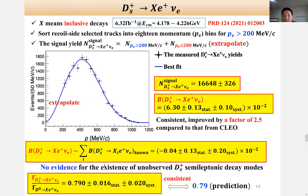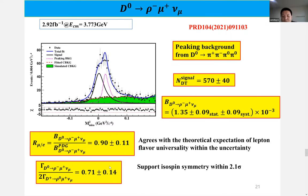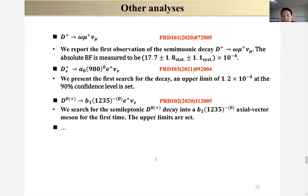Measurements of the inclusive branching fraction of Ds decay to X e nu are also shown, with electron momentum binned into 18 bins. Signals with momentum below 200 MeV are determined by extrapolation. The measured branching fraction is consistent with but improved by a factor of 2.5 compared to previous measurements. No evidence for excess of unmeasured Ds semileptonic decay modes was found. Additionally, measurements of Ds decay to K-minus e nu and Ds to K0 e nu were made using a new method with semileptonic tag, giving a test of isospin symmetry consistent within 1.9 sigma.